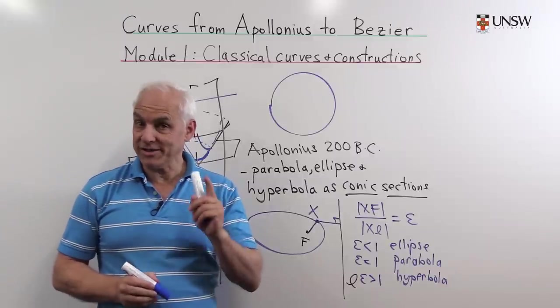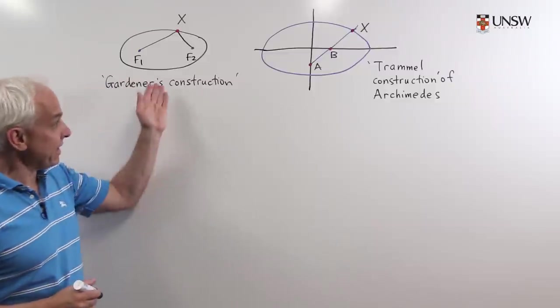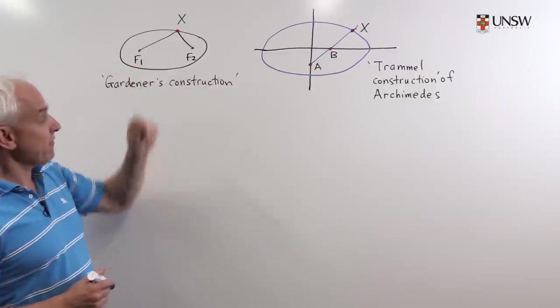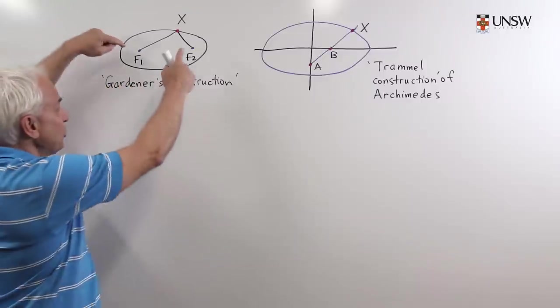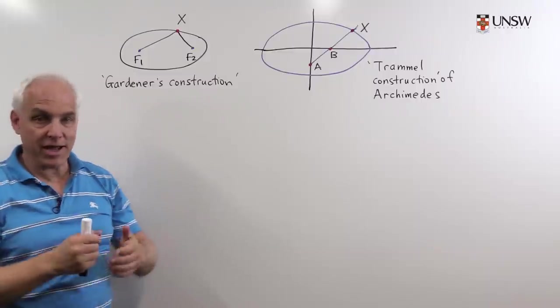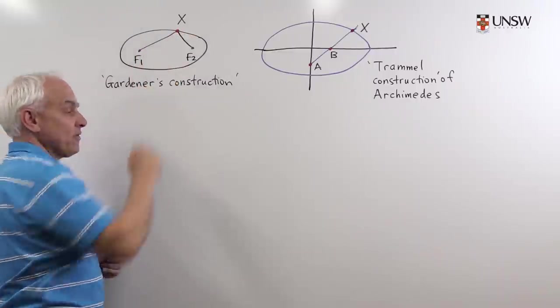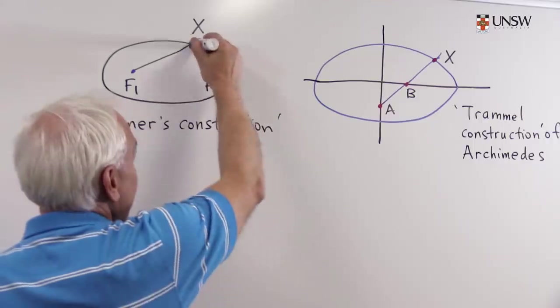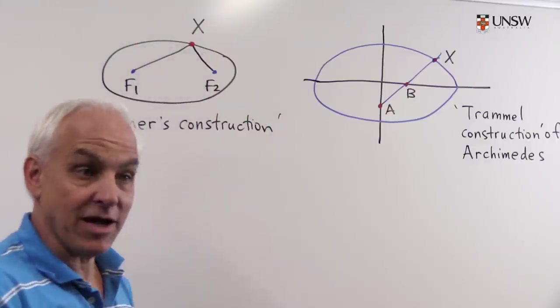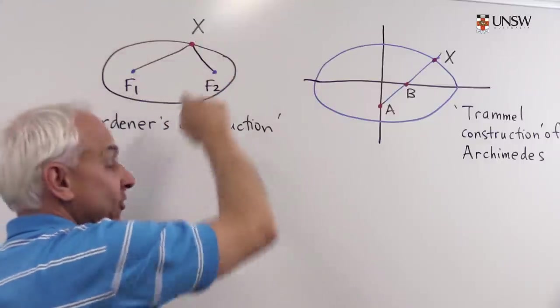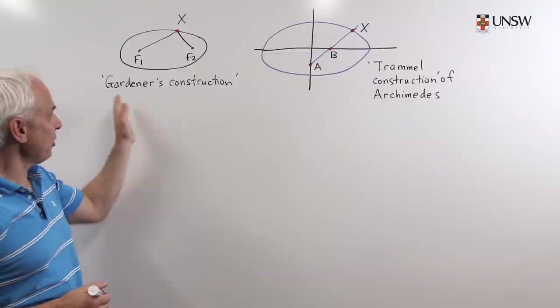But there are other ways of thinking about these conic sections too. Here are two other constructions of an ellipse. This one is very familiar. It's actually very possible to use it practically to actually create an ellipse. You start with two fixed points in the plane. You get a piece of string and attach the string from one point to the other, and then you tighten the string by putting a pencil there. And then as you move your pencil around keeping the string tight, the point x will traverse an ellipse which has F1 and F2 as the foci. Sometimes called a gardener's construction.